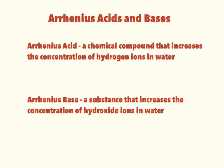In the late 1800s, a Swedish chemist named Svante Arrhenius came up with an idea about what acids and bases do when they're put in water. An Arrhenius acid is a chemical compound that increases the concentration of hydrogen ions in water. So if you have an acid — I'll use H-A as a generic term — and you put it in water, it will dissociate or ionize, breaking apart to make hydrogen ions (H+) and an anion in water, increasing the amount of hydrogen ions.